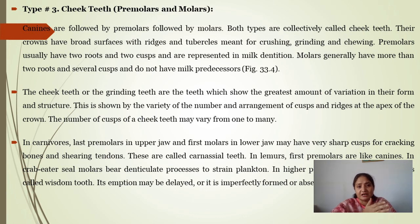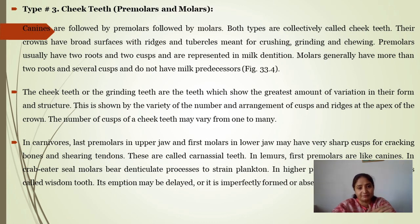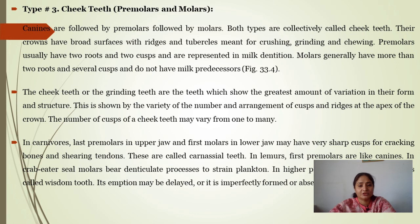In milk dentition you have premolars, but molars generally don't appear — molars are permanent teeth. Cheek teeth, or the grinding teeth, show the greatest amount of variation in their form and structure, as shown by the variety of number and arrangement of cusps and ridges at the apex of the crown. The number of cusps of a cheek tooth may vary from one to many.